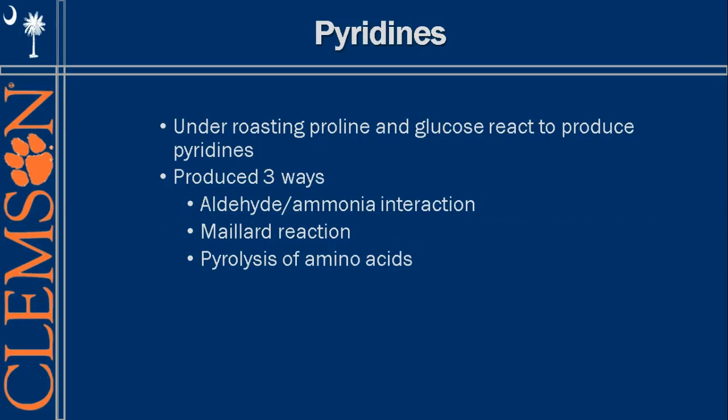Pyrimidines come from the reaction of proline and glucose. They are produced via aldehyde-ammonia interactions, the Maillard reaction, and pyrolysis of amino acids. These pyrimidines are more prevalent in seared steaks and grilling — kind of the opposite ratio to pyrazines — being higher in intense, high-heat, short-time cooking methods.